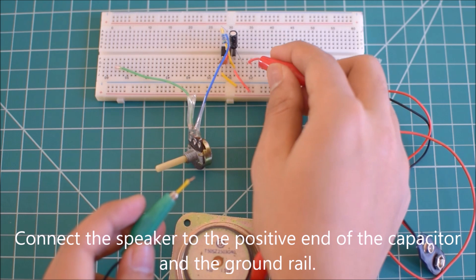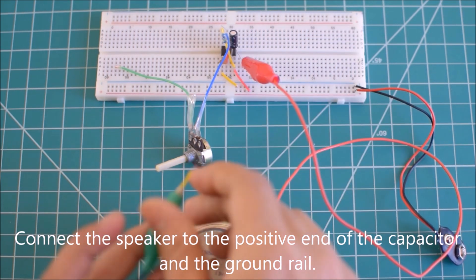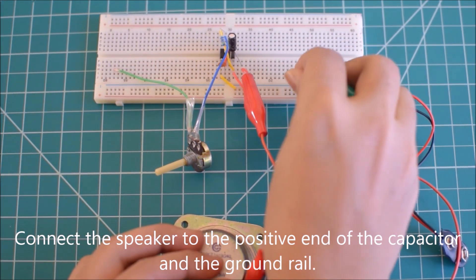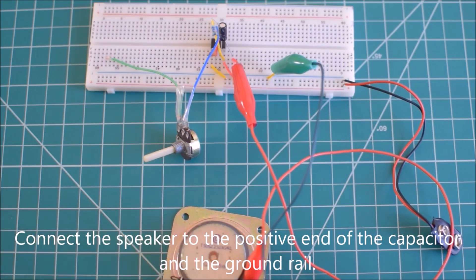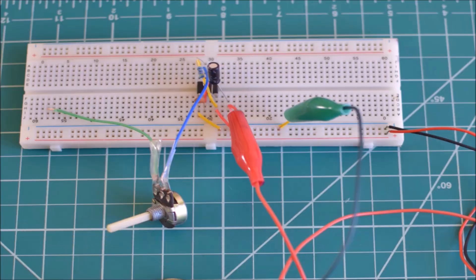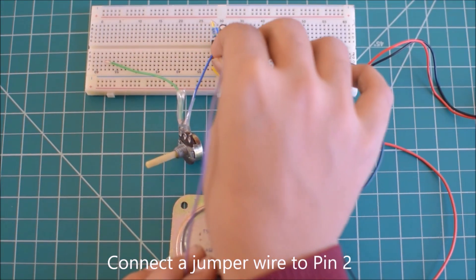Connect the speaker to the positive end of the capacitor. Connect the other end of the speaker to the ground rail. Connect a jumper wire to pin 2.